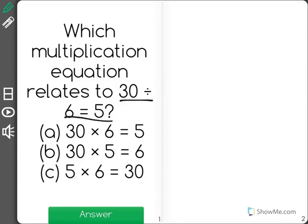A, 30 times 6 equals 5, B, 30 times 5 equals 6, or C, 5 times 6 equals 30.